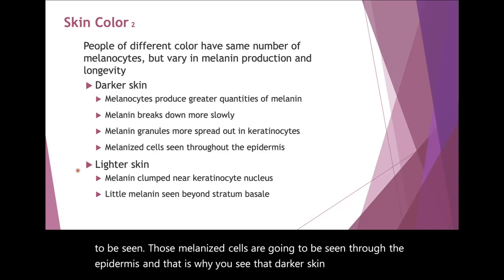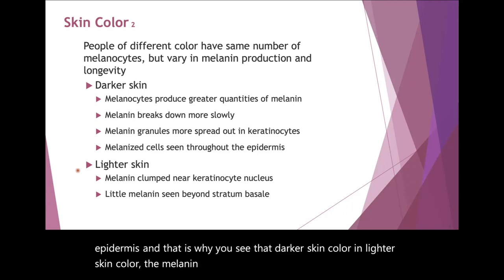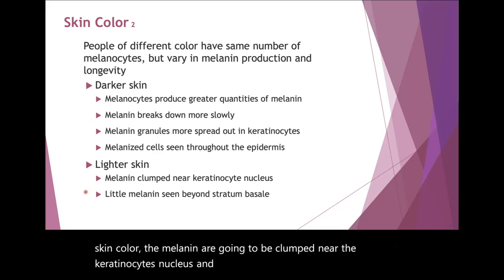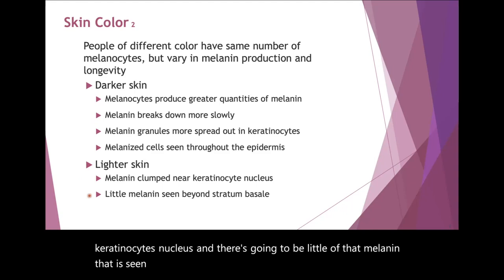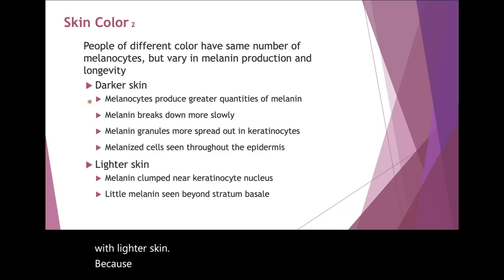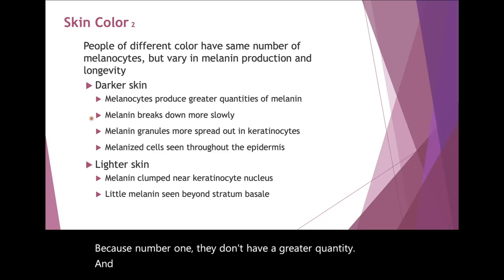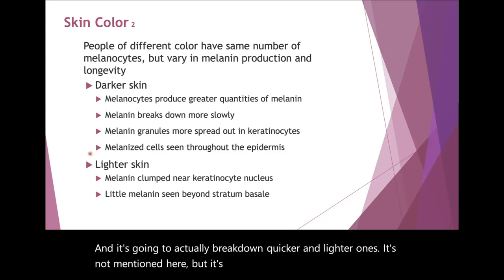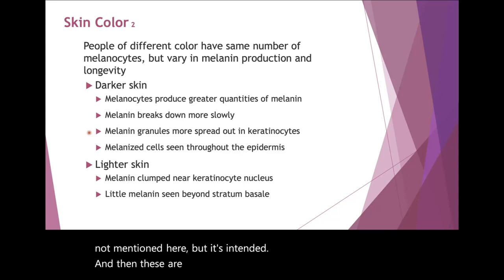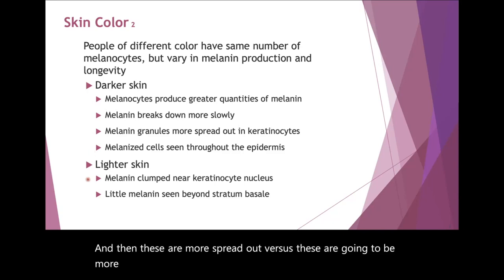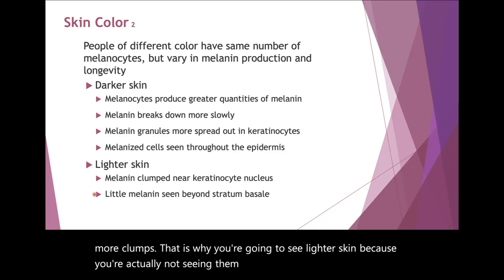In lighter skin color, the melanin is going to be clumped near the keratinocyte's nucleus, and there's going to be little of that melanin seen beyond the stratum basale. Because they don't have a greater quantity and it breaks down quicker, and the melanin is more clumped versus spread out, that is why you're going to see lighter skin — you're actually not seeing the melanin in that skin.